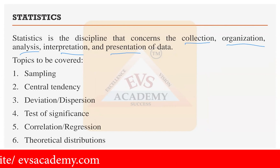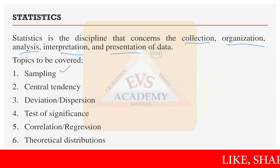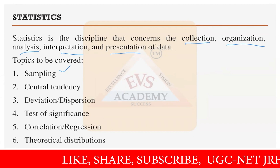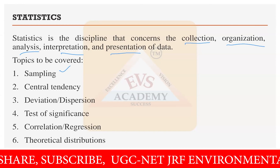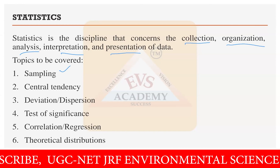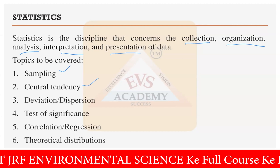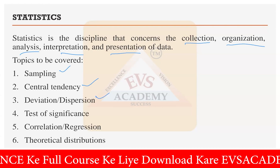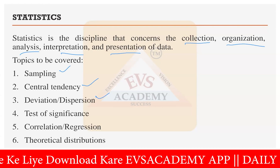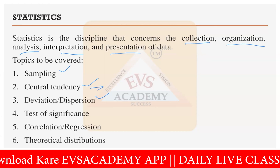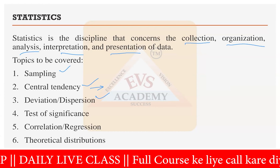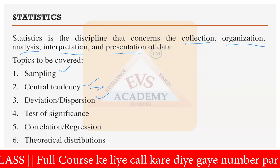The first topic we have to cover is sampling — what are the different sampling methods and the differences between them. Chances are there that theoretical questions can be asked from this sampling section. Then we have central tendency, in which only numerical questions can be asked. Central tendency means mean, median, and mode — finding out the middle of the data is called central tendency.